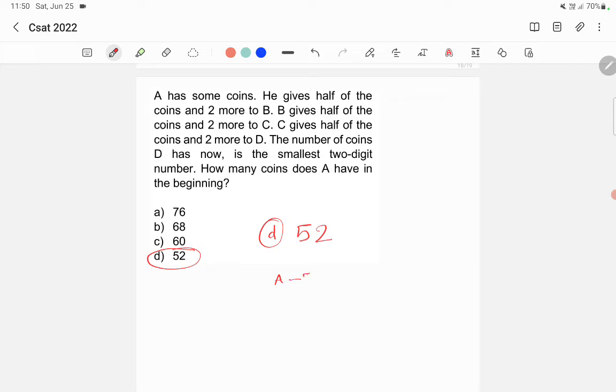A will be having 52. B will be having 52 by 2 plus 2, that is 28. C will be having 28 by 2 plus 2, 16. D will be having 16 by 2 plus 2, which is equal to 10. 10 is the smallest two-digit number, so option D is correct. In these two ways you can solve this problem.